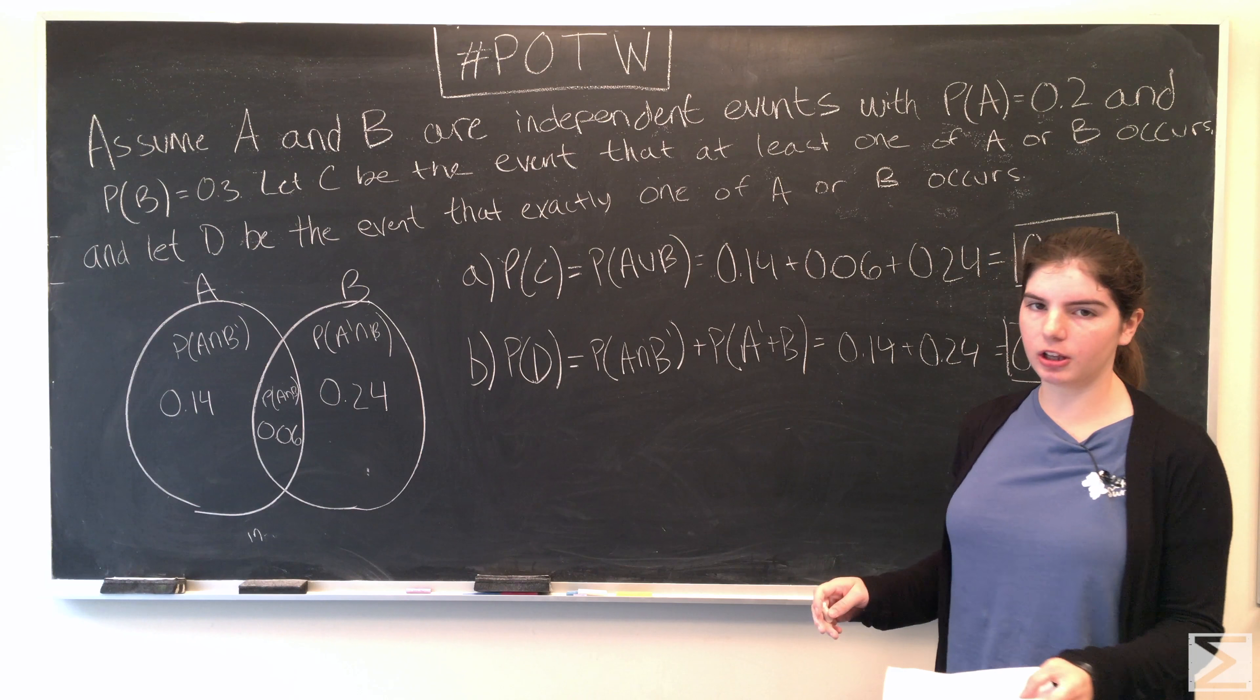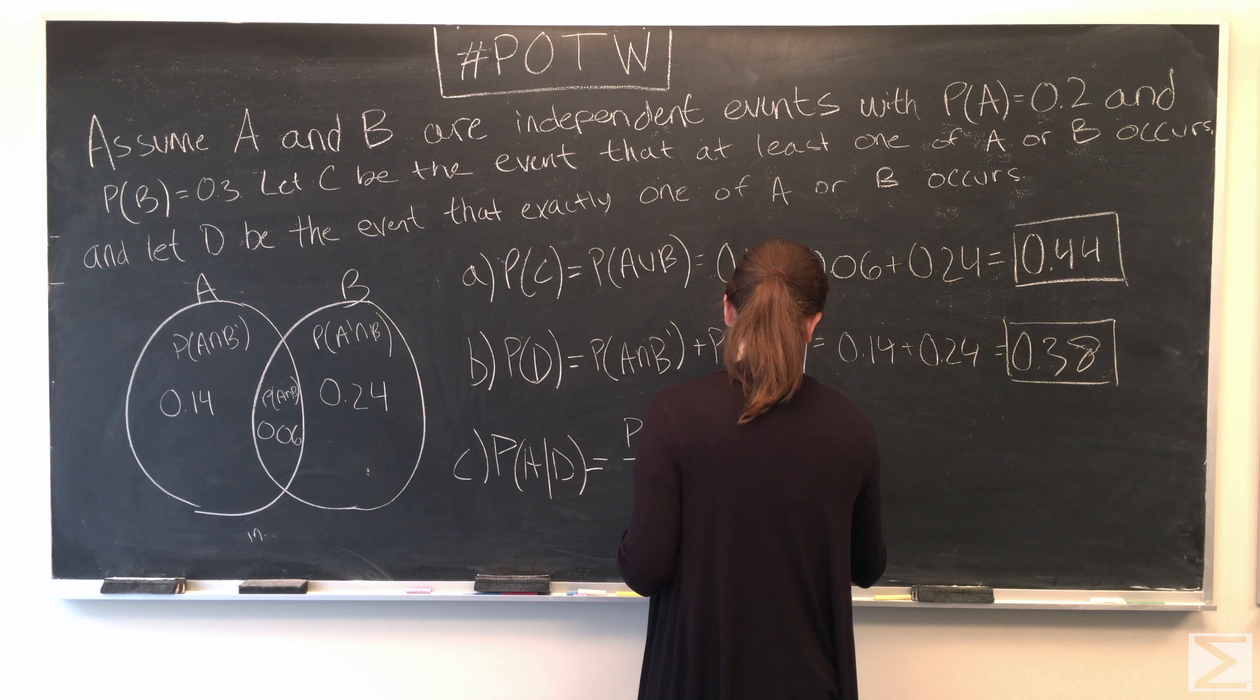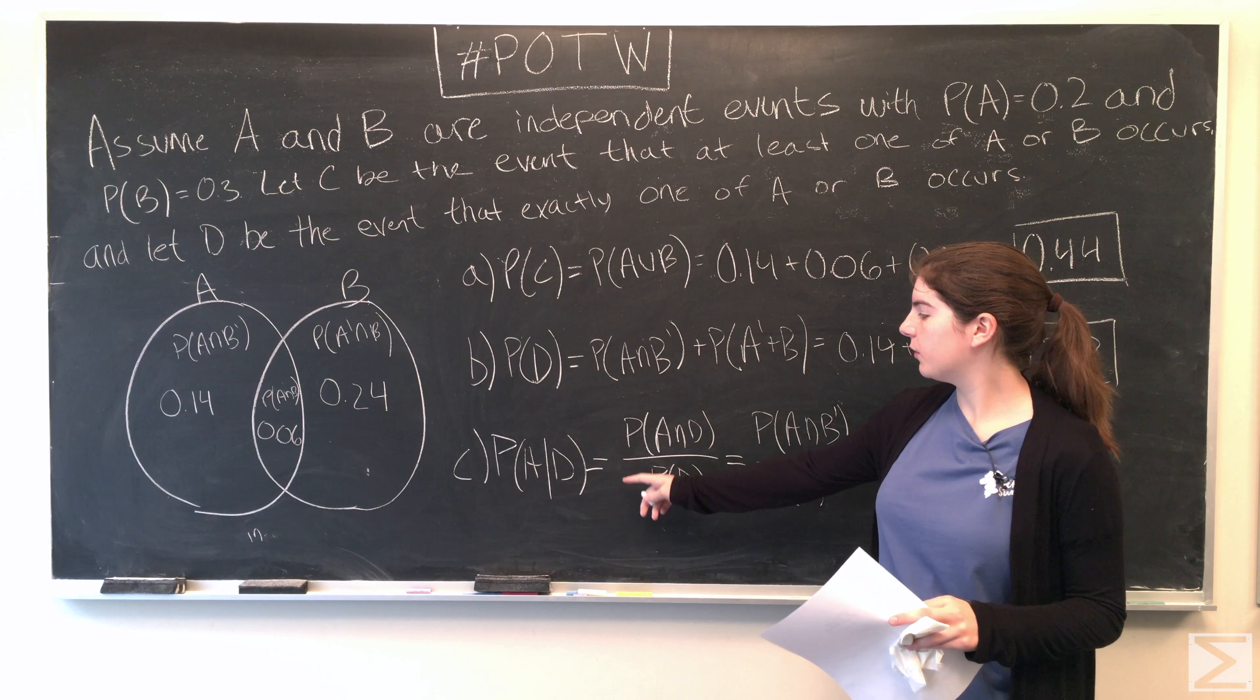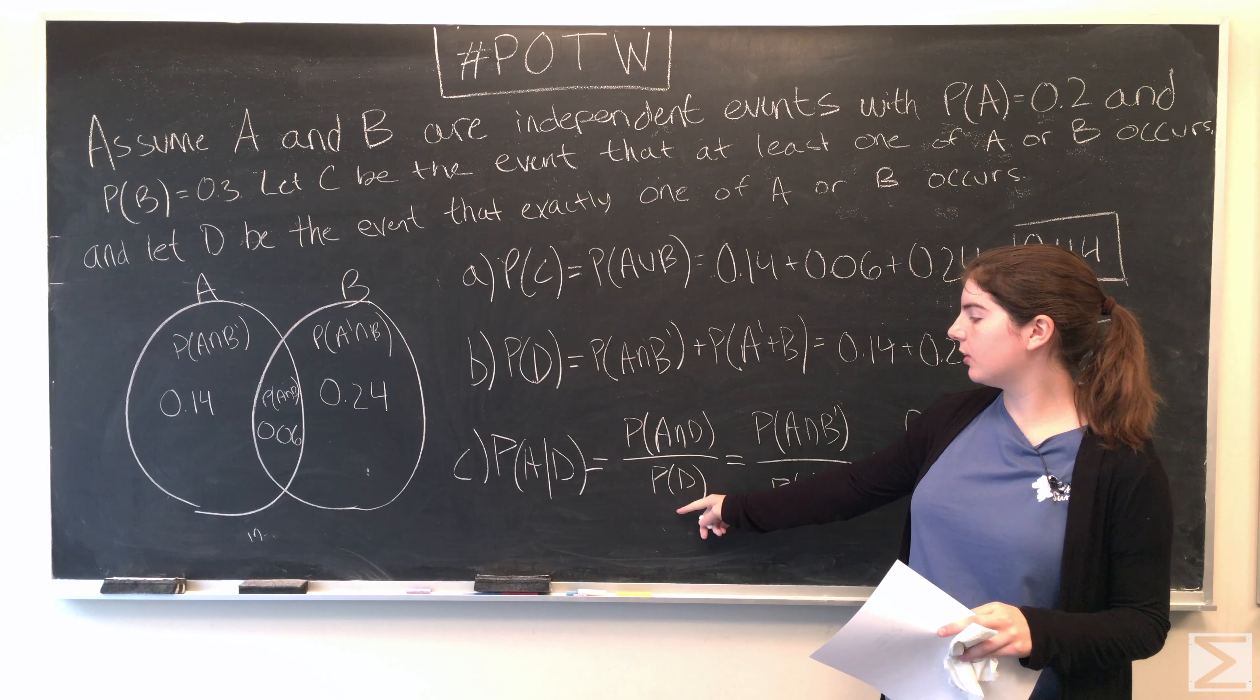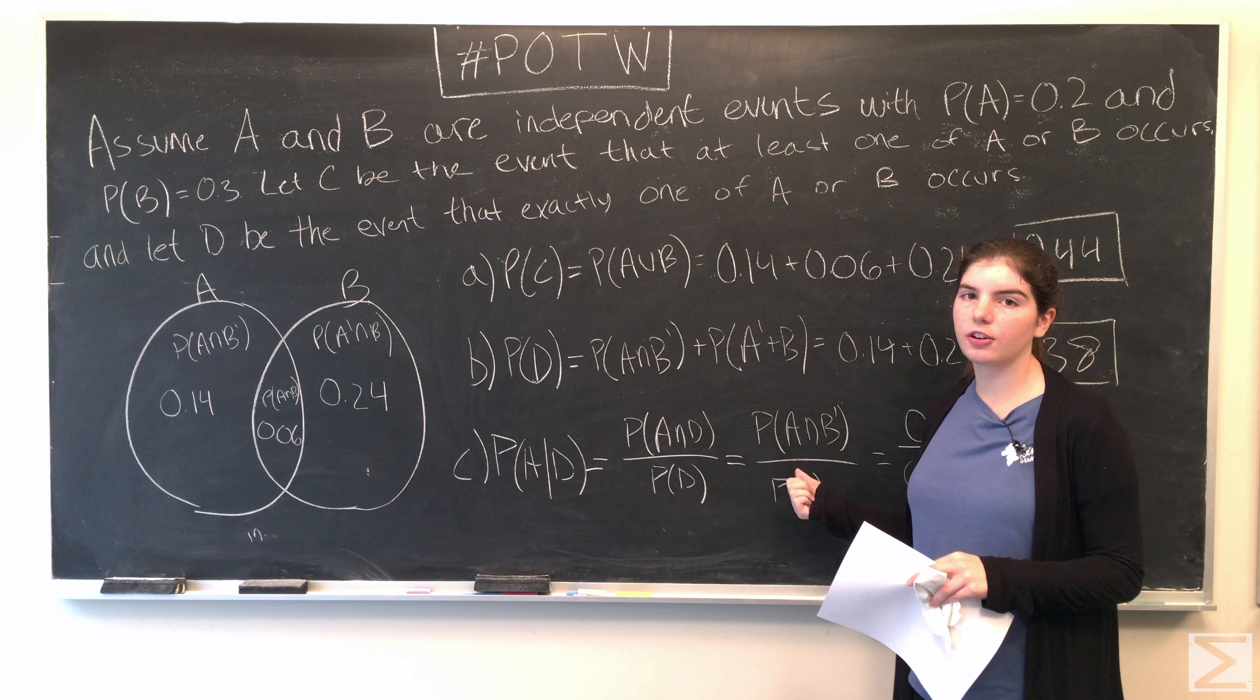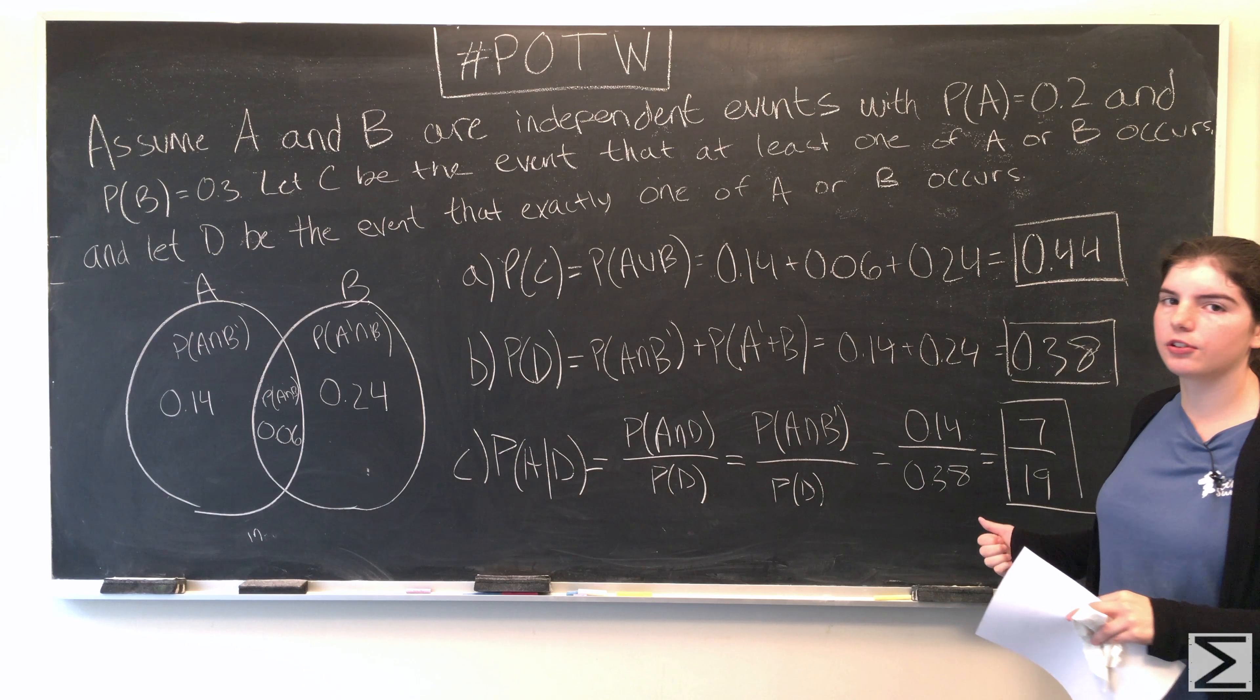And now we're going to find the probability of A given D. With conditional probability, the formula is you take the intersection over the probability of D. And you have to notice that the intersection of A and D is equal to the probability that A occurs and B doesn't. And once you see that, it's straightforward and you can just plug in. So we have 0.14 over 0.38 and this reduces to 7/19.